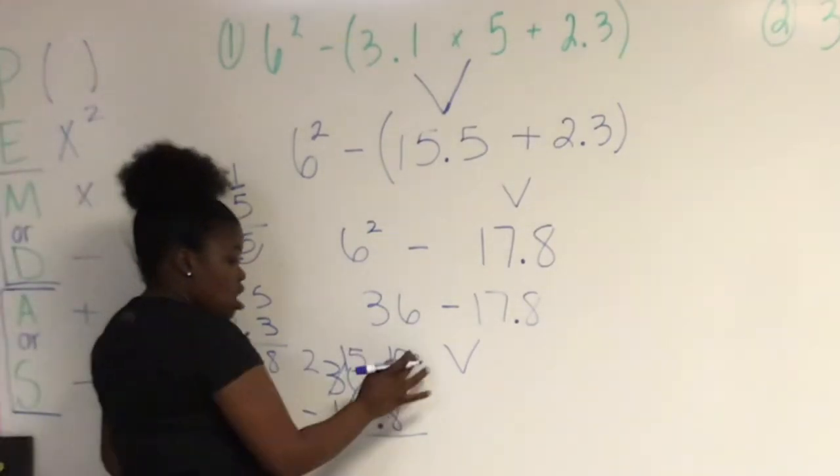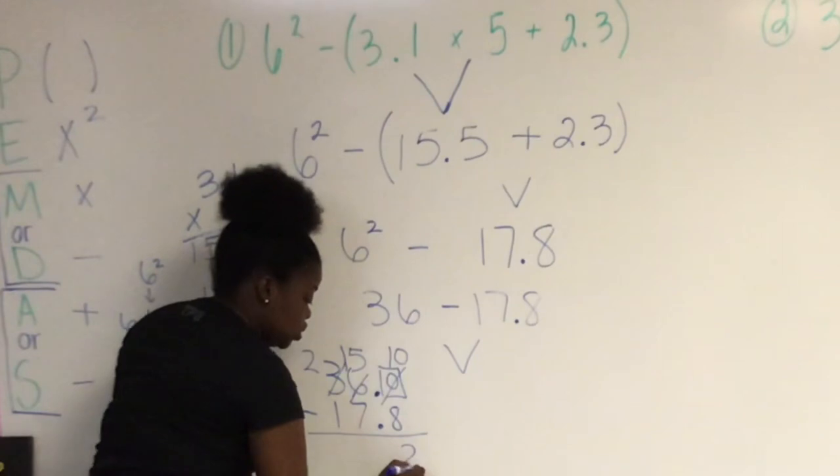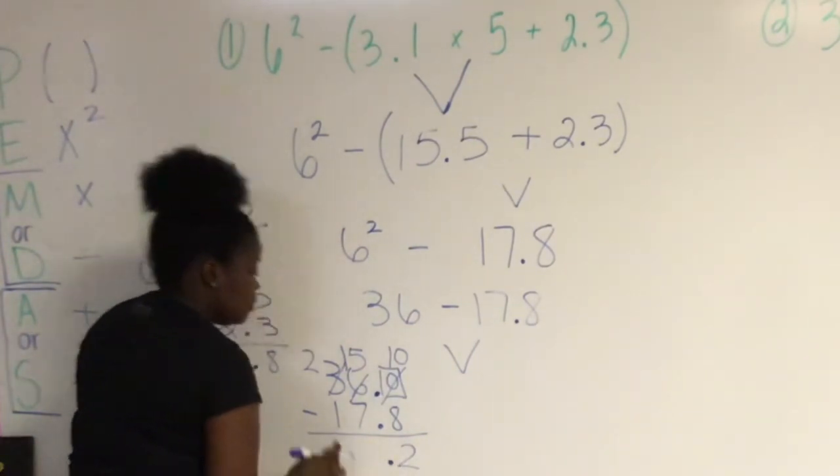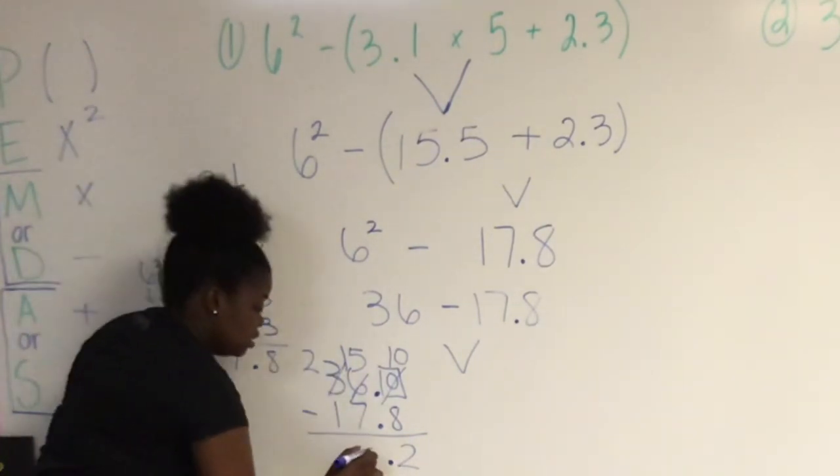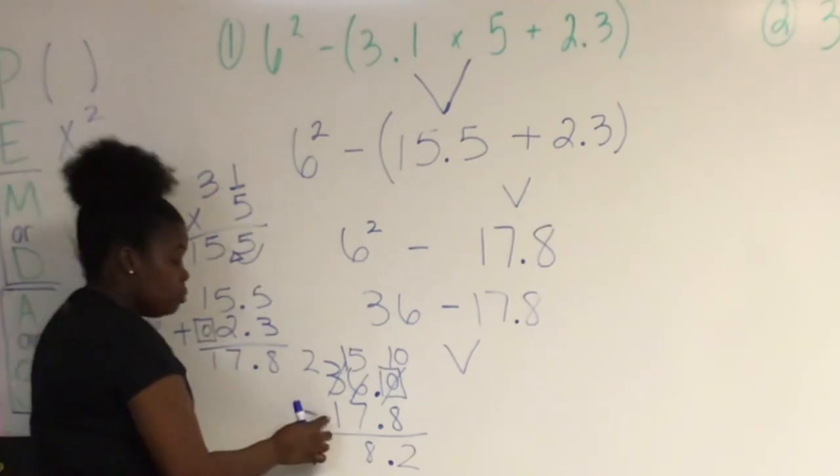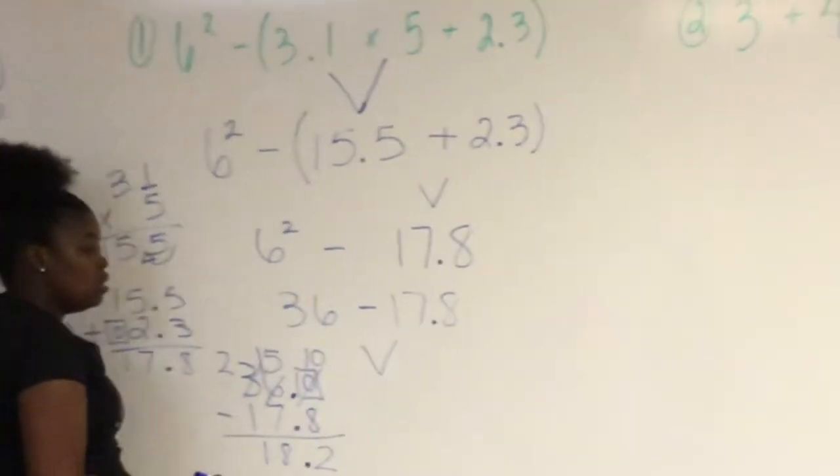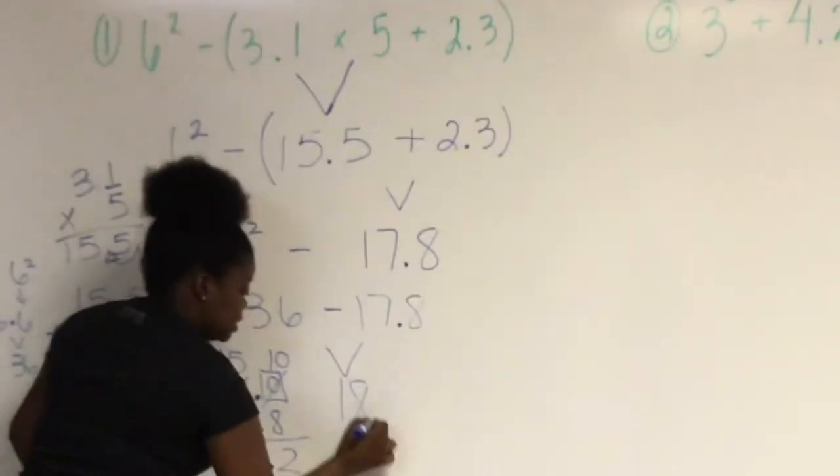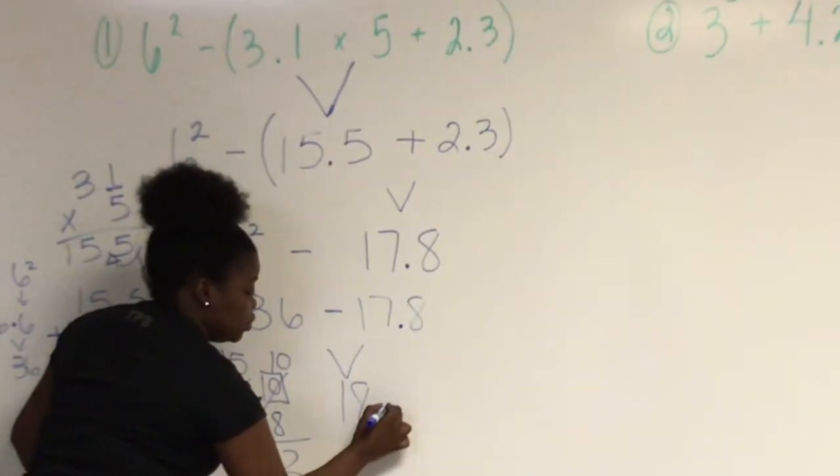Now I can subtract. 10 minus 8 equals 2. Bring down my decimal. 15 minus 7 equals 8. And 2 minus 1 equals 1. My final answer is 18 and 2 tenths.